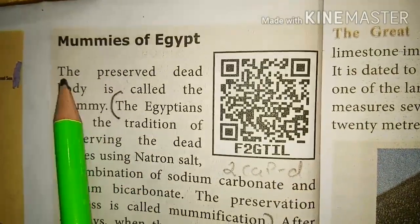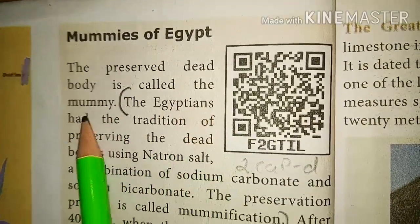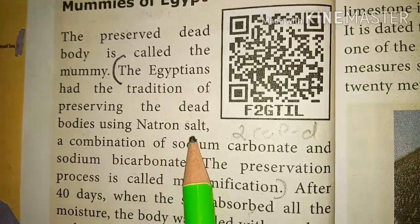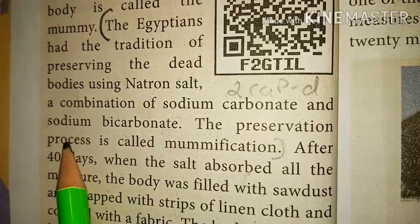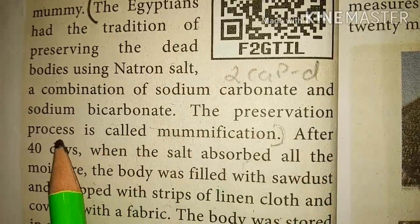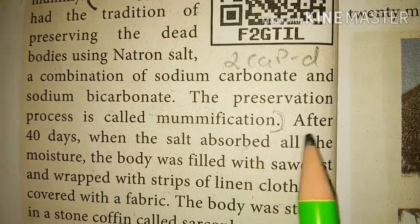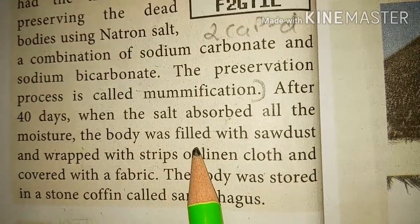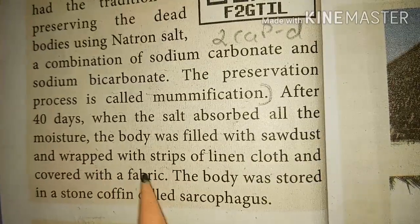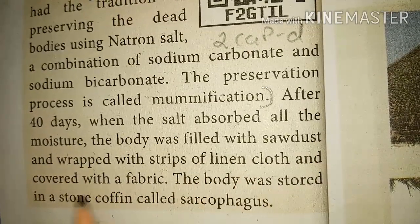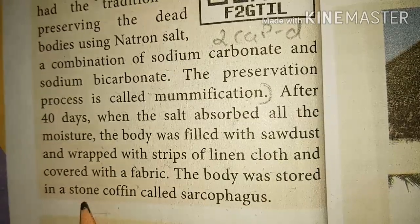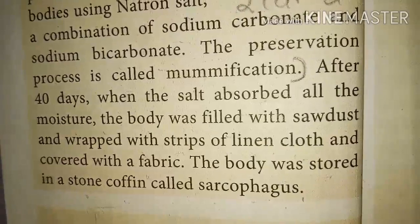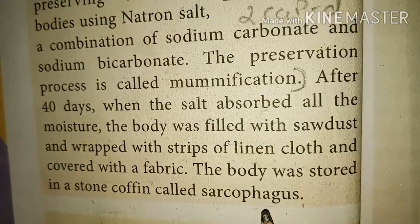Look at the mask of Tutankhamen and the mummified body of Tutankhamen. The preserved dead body is called a mummy. The Egyptians had the tradition of preserving dead bodies using natron salt — a combination of sodium carbonate and sodium bicarbonate. The preservation process is called mummification. After 40 days, when the salt absorbed all the moisture, the body was filled with sawdust and wrapped with strips of linen cloth, covered with fabric, and stored in a stone coffin called a sarcophagus. Now let us see a short video of the mummification process.